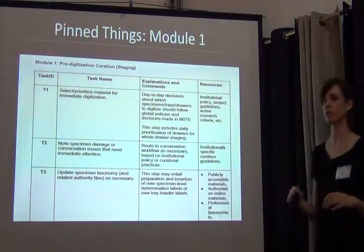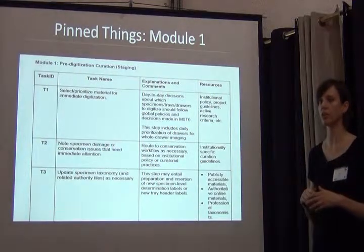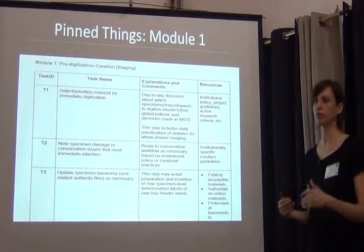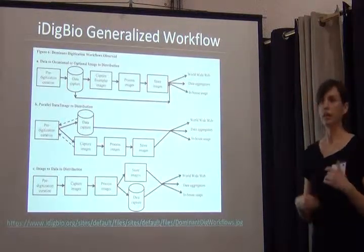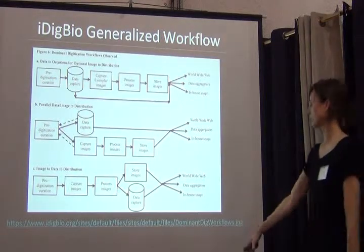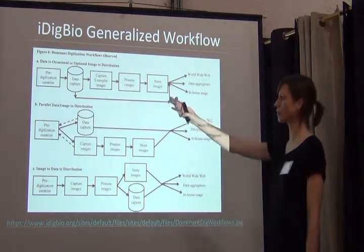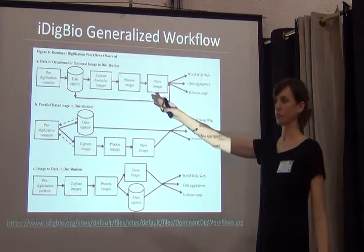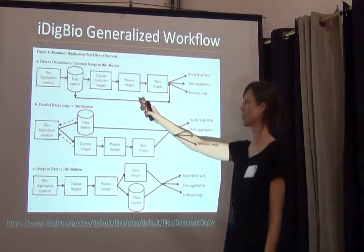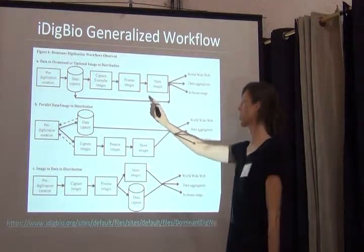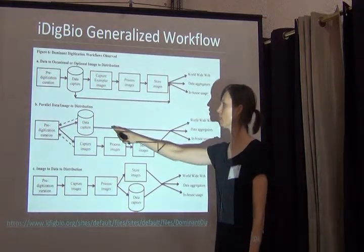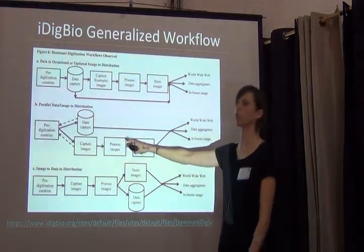Read through all of them — some may not apply to you, some may be very useful. Go through each task and pull out the ones you think will be useful for you. You could write these up as a general workflow; iDigBio has these published on their website. For example, going from pre-digitization to data capture, taking exemplary images, processing those images, and storing them — or choosing workflow B or C.